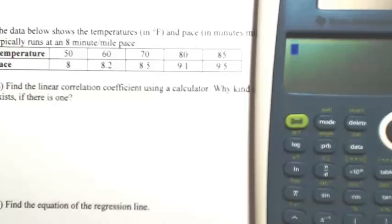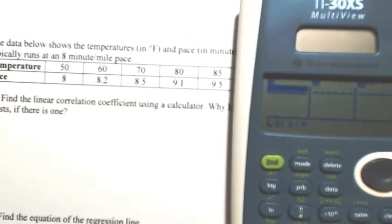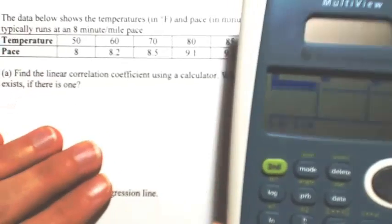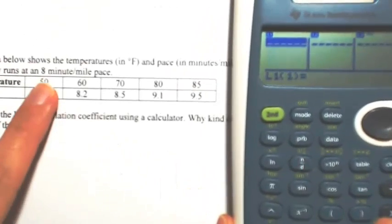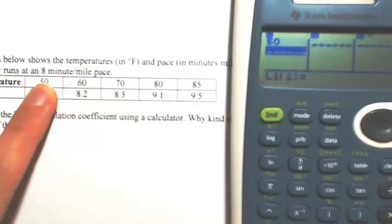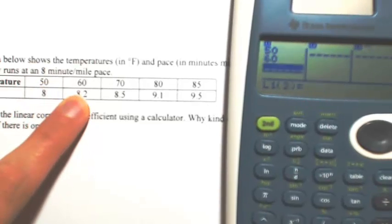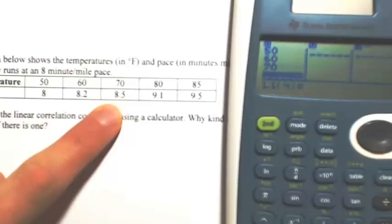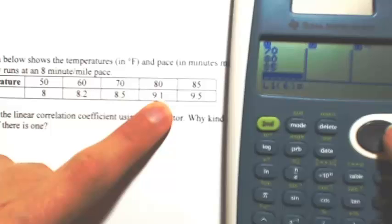First, I want to put all the data in, so I'm going to hit DATA. The first column is going to be List 1, which is all the temperatures: 50, 60, 70, 80, 85. Then scroll to the right to get to the second list.